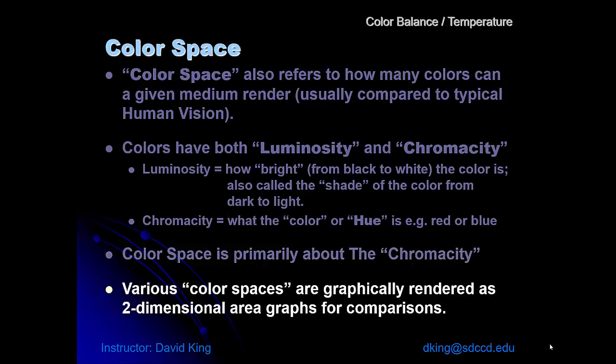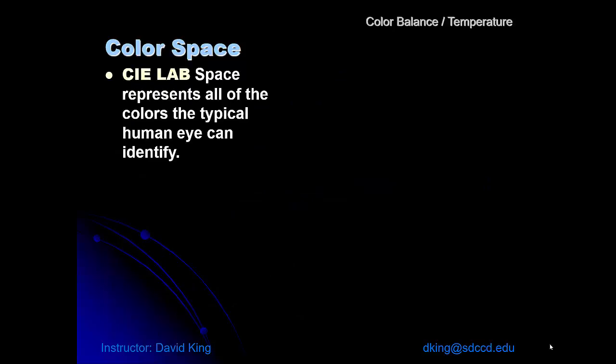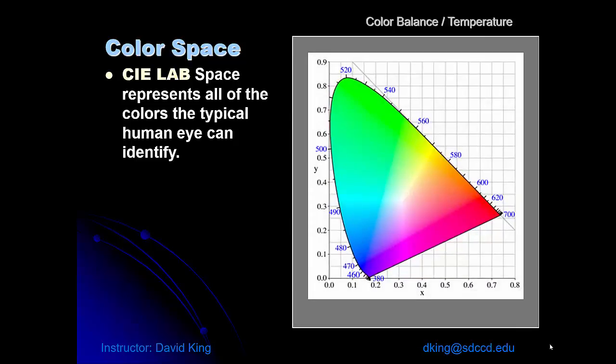Various color spaces are around and are rendered graphically so we know what we're talking about, but they all are derived from this called LAB space. It represents all of the colors the typical human eye can identify. In the lower point you'll see numbers. They end in 380, but right at the corner that number should be 400. In the far corner that number is 700. Those represent the wavelengths in nanometers that these colors represent in the electromagnetic spectrum.